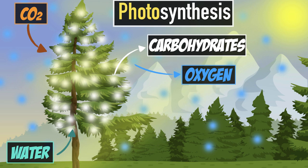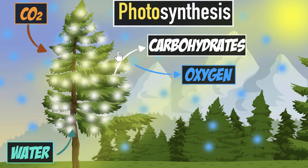But here are the key questions: why can plants and trees synthesize their own carbohydrates, but we animals can't? What do they have that we don't? And what exactly happens during this process — how do they produce carbohydrates from raw materials? These are the questions we're going to try and answer in this video.